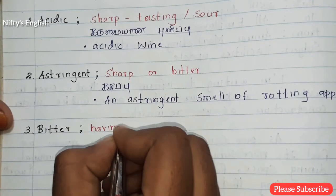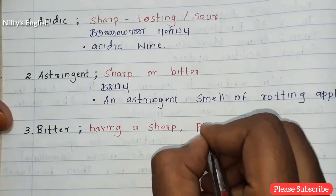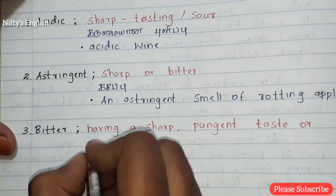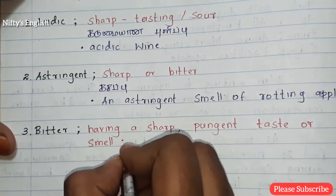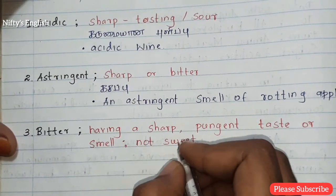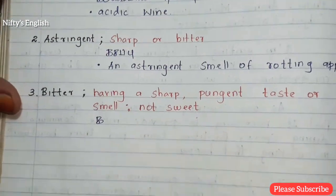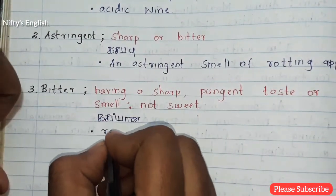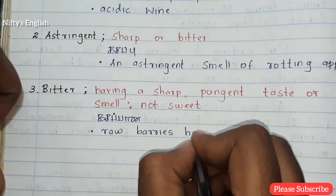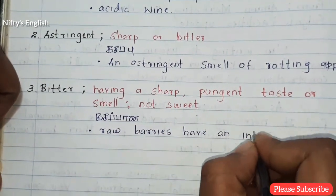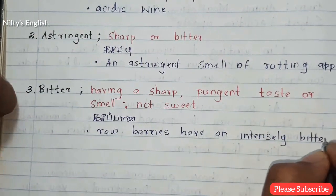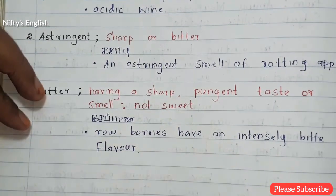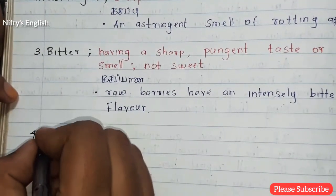The third one is bitter — having a sharp, pungent taste, not sweet. Bitter means kasapana in Tamil. For example: roberies have an intensely bitter flower.